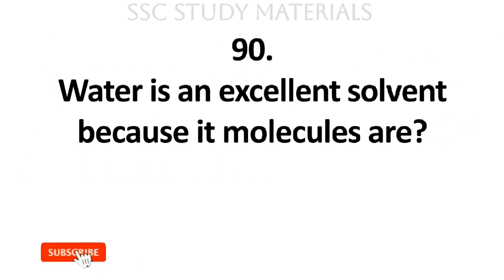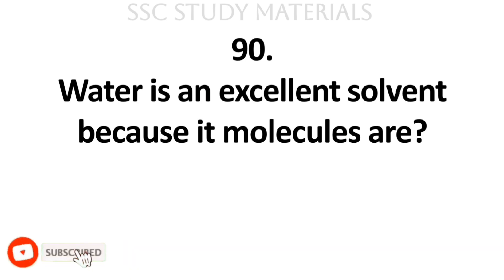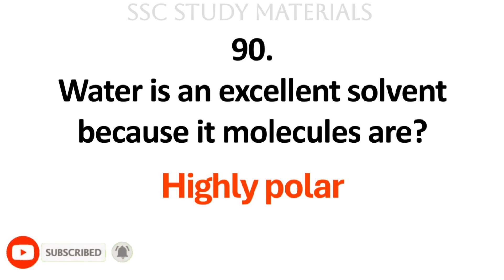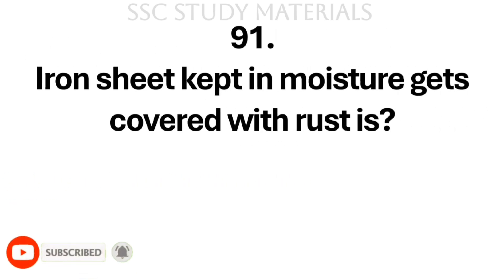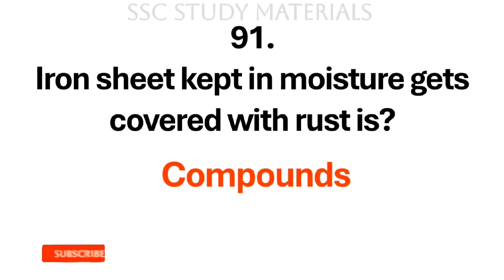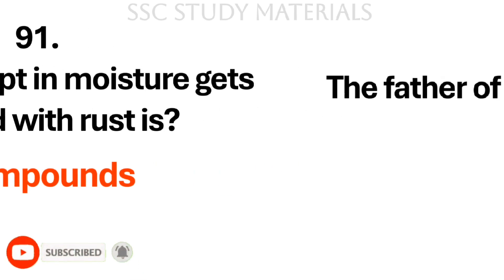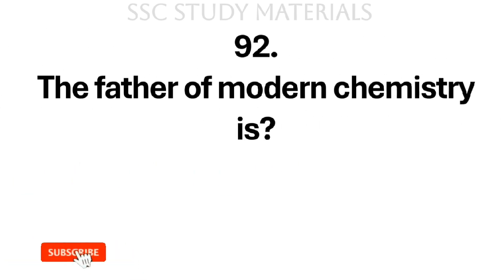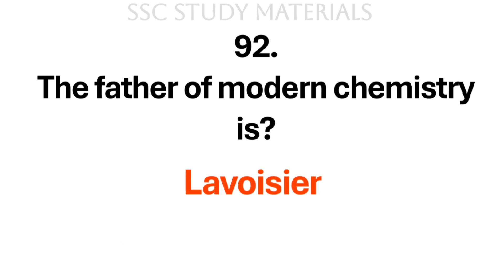Question No. 90: Water is an excellent solvent because its molecules are? Answer: Highly polar. Question No. 91: Iron sheet kept in moisture gets covered with rust, which is a? Answer: Compound. Question No. 92: The father of modern chemistry is? Answer: Lavoisier.